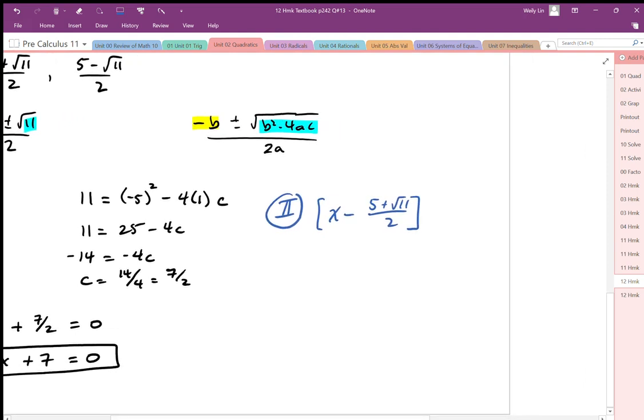So there's my first root: x minus 5 plus root 11 over 2, and then I'm going to put that in brackets, times x minus 5 minus root 11 over 2. That's all equal to 0.